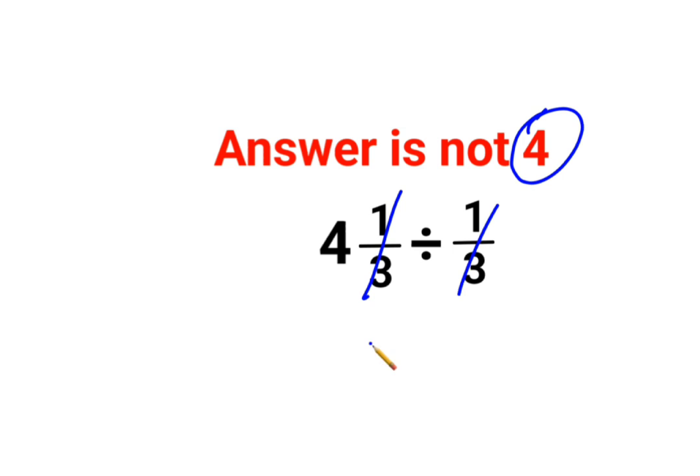1 by 3, 1 by 3 gets cancelled. 4 divided by 1, the answer is supposed to be 4. But no, that's not how these things work. Please understand, this entire fraction is a mixed fraction.